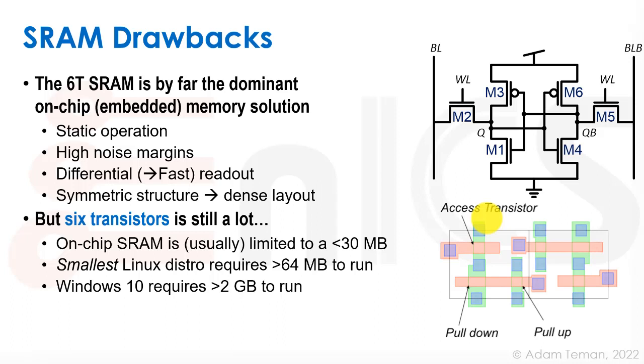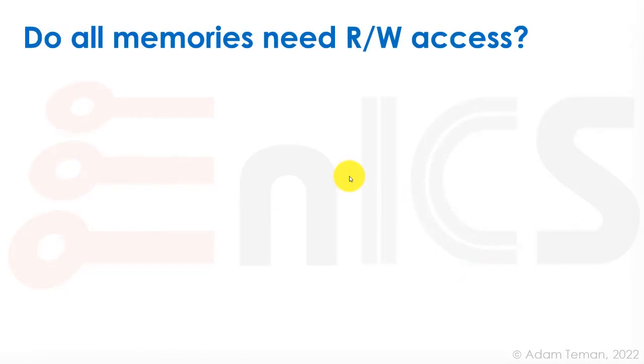The smallest Linux distribution requires over 64 megabytes to run, so we can't fit all of our Linux even onto the SRAM that's on-chip, and therefore we always need to go off-chip. Windows 10 requires over 2 gigabytes of memory to run. So can we achieve higher density than this SRAM that we have? And the answer is, of course, we can, but let's start with asking a question.